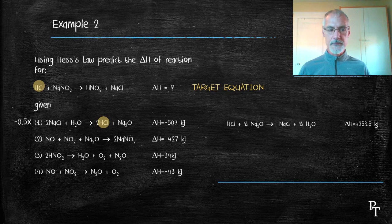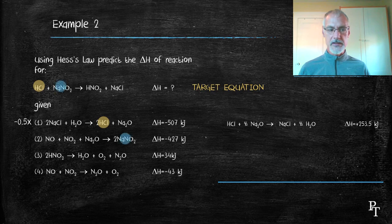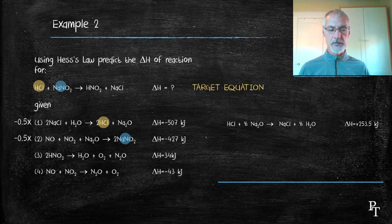Now I'll go to equation number two. Examining equation number two, I see that sodium nitrite is common. But again, I have two of them and they're on the wrong side. So again, I'll multiply by negative a half. And here's the equation.